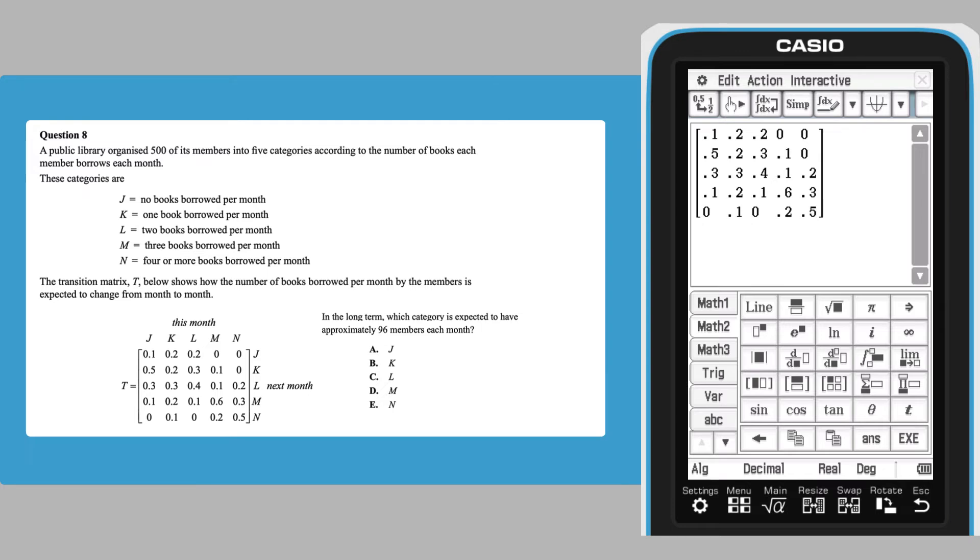Once done, move the cursor to the left of the matrix and press the exponent key. Enter your choice of large exponent, but be warned this is a significant computation and it will take a short while for the ClassPad to complete, especially if a large transition matrix like this one is being used. Don't worry though, it will be much quicker than calculating the result by hand.